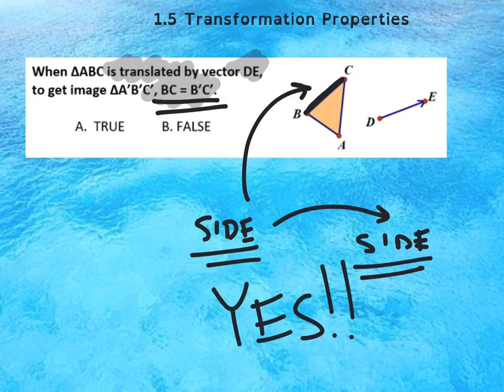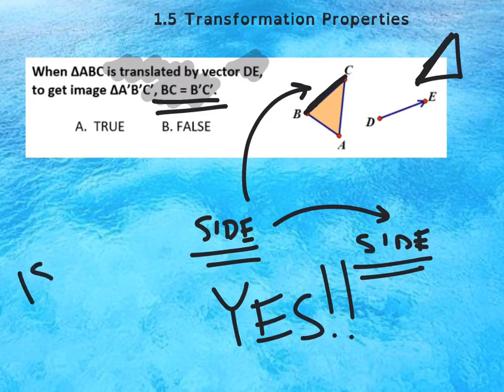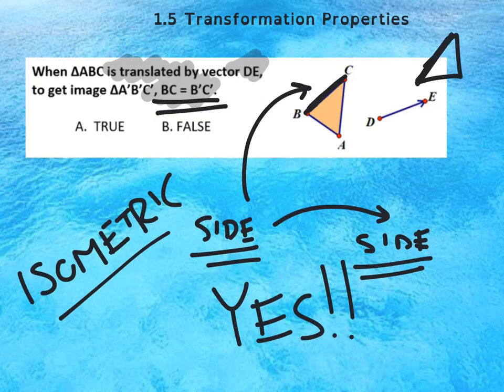And our answer is yes, that is totally true in a translation. So this is not talking about the distances between the paths of the points; this is talking about the original side to the translated side at the other end, which will be exactly the same. That is definitely a true statement and the reason it is, is because this motion is isometric.